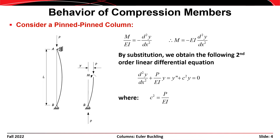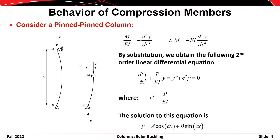By substitution we obtain the second-order linear differential equation: d²y/dx² plus P over EI times y equals zero. That can be written in differential form as y'' + c²y = 0, where c² = P/EI. The solution to this equation can be written in its generic form as y equals A times cosine(cx) plus B times sine(cx).